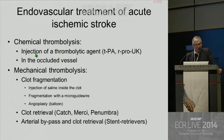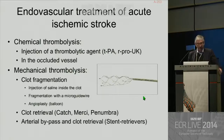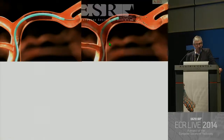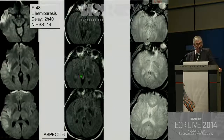Endovascular treatment developed in several steps: chemical thrombolysis first, which was injection of a thrombolytic agent in the occluded vessel; next step was mechanical thrombolysis with clot fragmentation; then first-generation devices for clot retrieval, including the Merci and Penumbra devices; followed by second-generation devices, which were stent retrievers able to do arterial bypass and clot retrieval. You pass the microcatheter through the clot, deploy the stent inside the clot to immediately restore flow, catch the clot in the stent, and retrieve both.